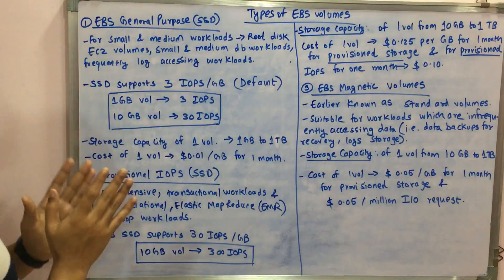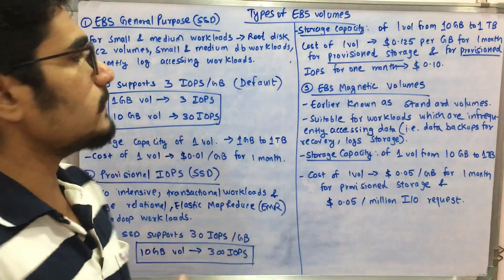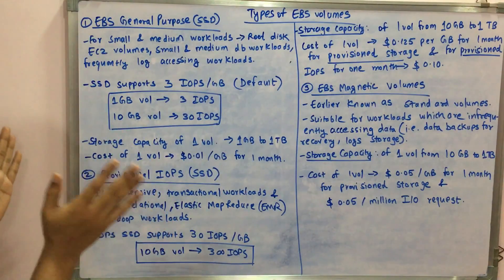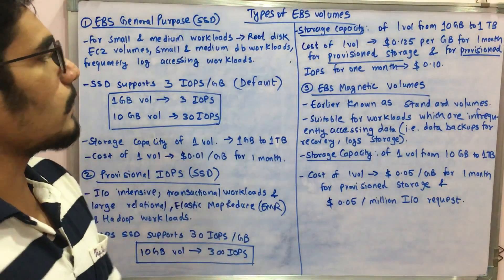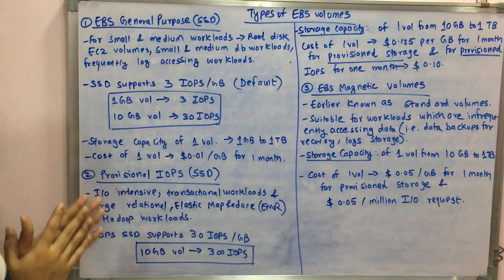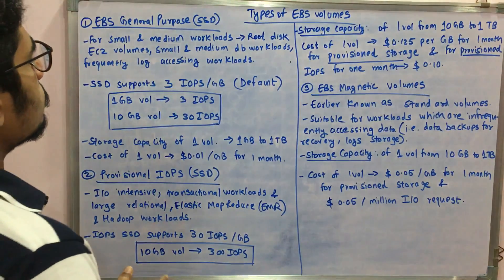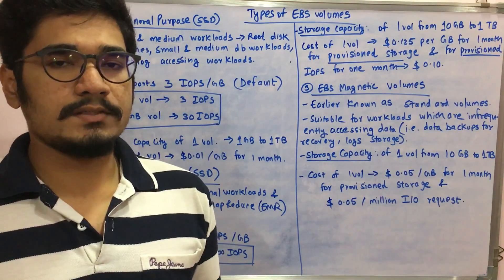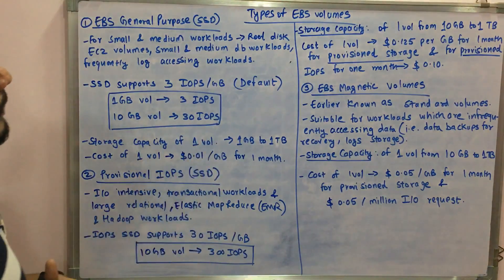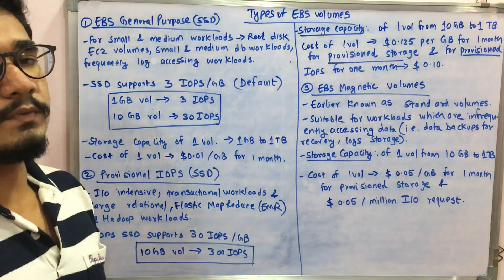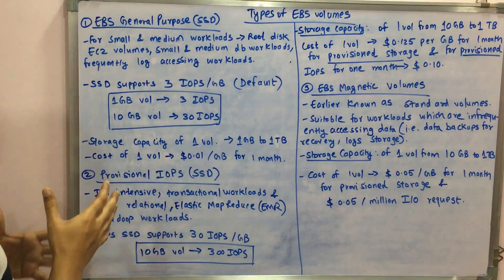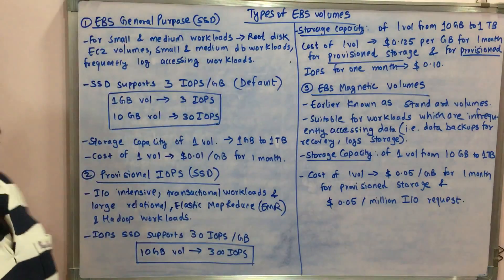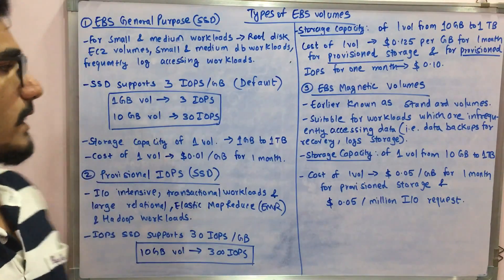The very first type of EBS volume is EBS General Purpose, and it's a solid state drive, that is SSD. It is used mainly for small and medium workloads — for example, root disk EC2 volumes at the initial configuration stage, small and medium database workloads, and frequently accessed log workloads. For all those, you use the EBS General Purpose SSD.